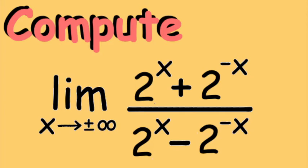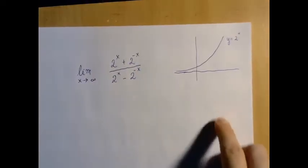So we have a limit to compute as x approaches infinity. Before we start, this is what 2 to the x looks like.